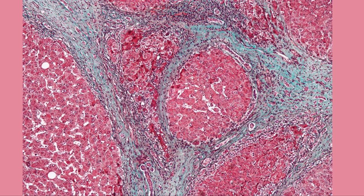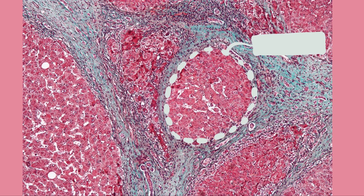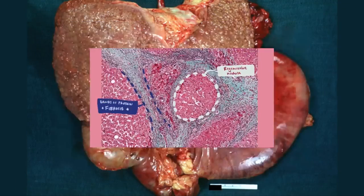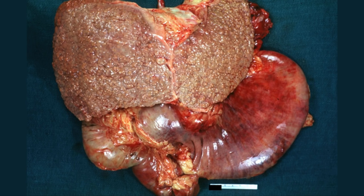Here's a classic histology image of cirrhotic tissue. This clump of cells in the middle is the regenerative nodule, and these blue stains surrounding it are the bands of protein from the process of fibrosis. If we zoom out a bit and look at it with the naked eye, we'll again see these nodules, which have fibrotic protein bands in between.